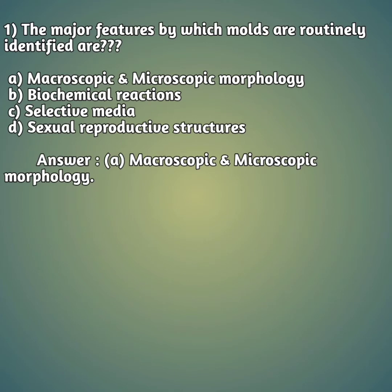Today's first question: the major feature by which molds are routinely identified are — option A: macroscopic and microscopic morphology; option B: biochemical reactions; option C: selective media; option D: sexual reproductive structure. The right answer is option A, macroscopic and microscopic morphology.